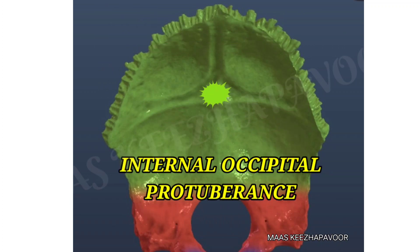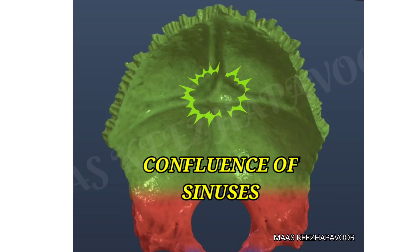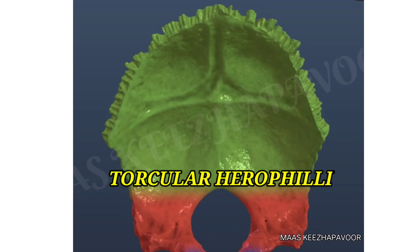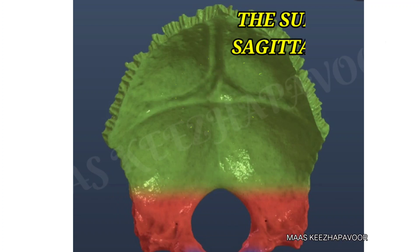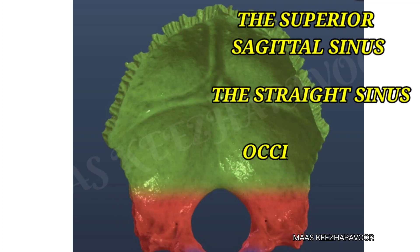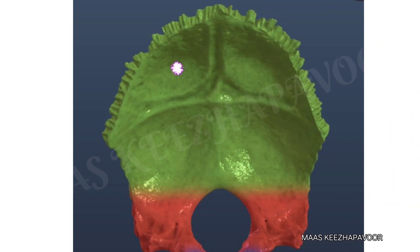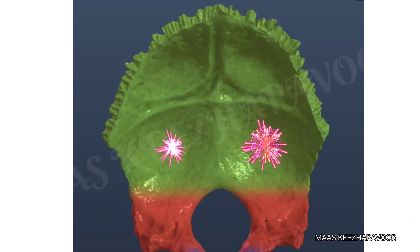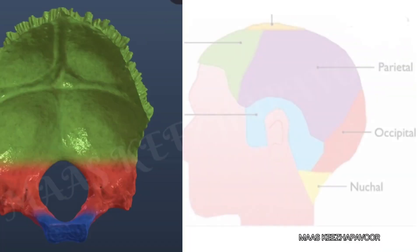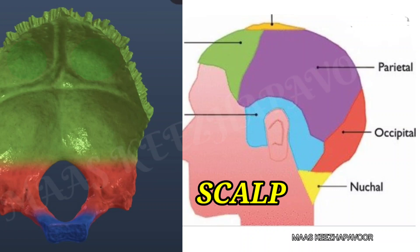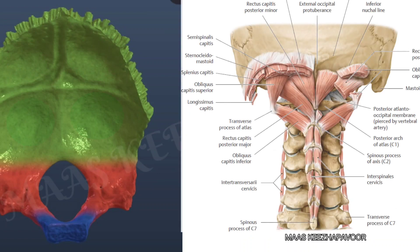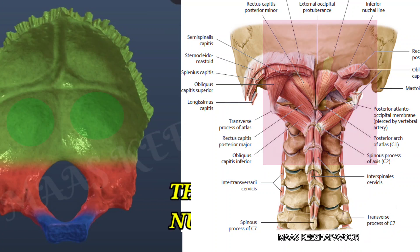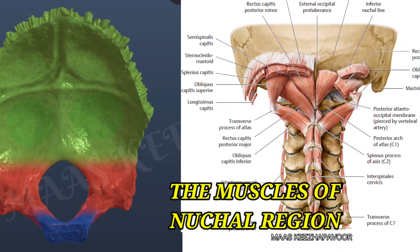The internal occipital protuberance is related to the confluence of sinuses called the torcular Herophili. Here, the superior sagittal sinus, straight sinus, occipital sinus, and transverse sinus all meet. Above the transverse sulcus is a triangular fossa lodging the occipital lobe of the cerebrum, and below it is a quadrangular fossa lodging the cerebellum. The upper fossae are protected by the scalp and thick occipital bone; the lower fossae are protected by muscles of the nuchal region and are thin-walled.